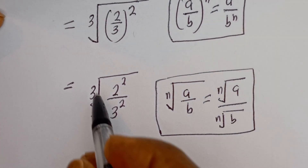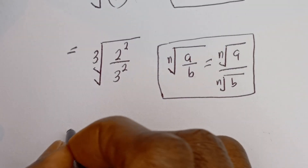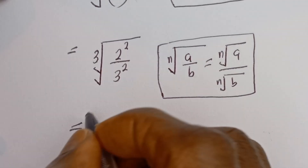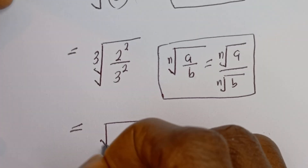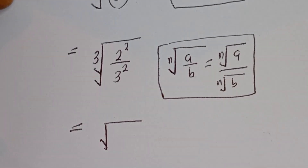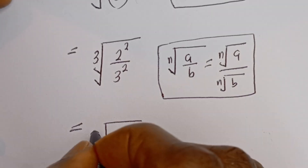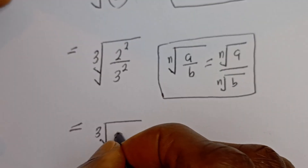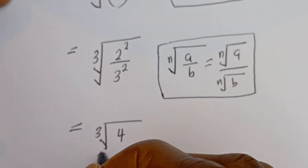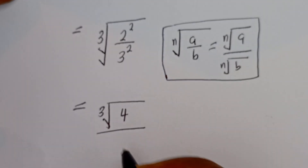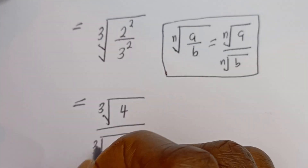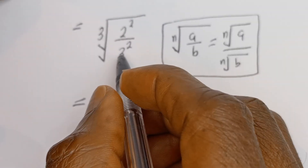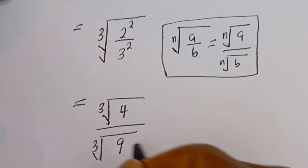Then this can be written as the cube root of 2 squared — that is 4 — divided by the cube root of 3 squared — that is 9.